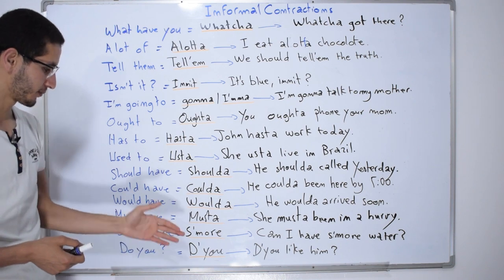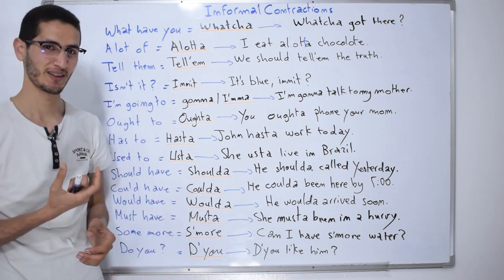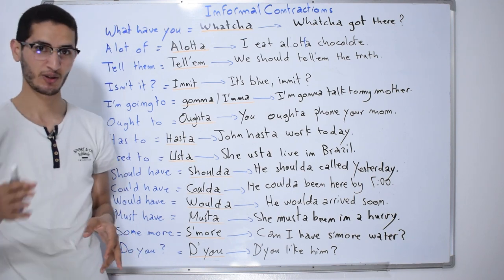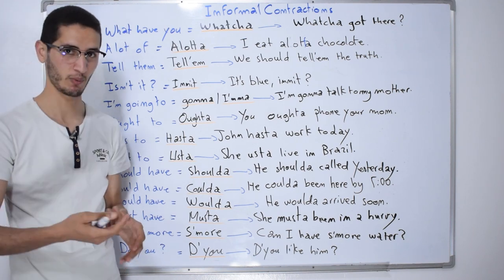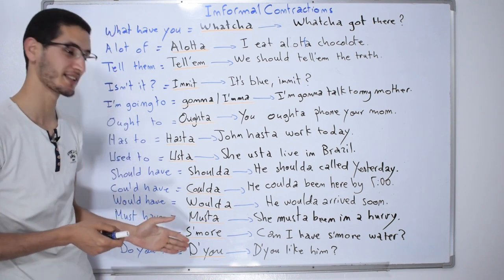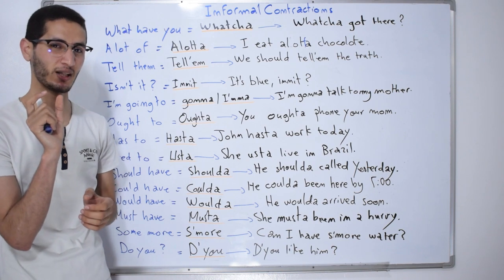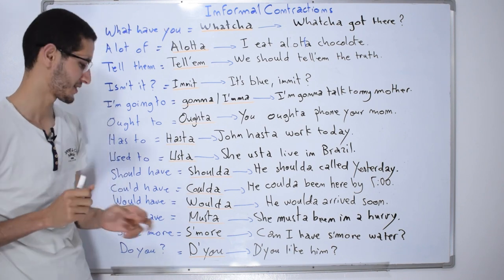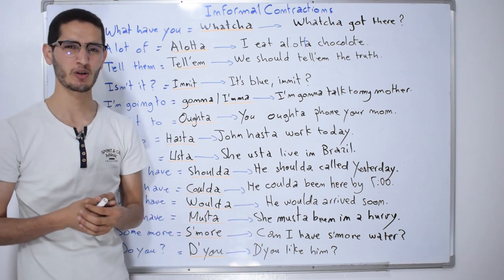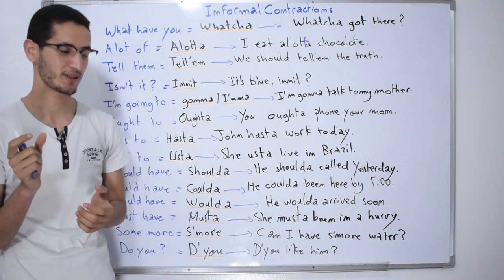'Some more' contracts to 's'more' — we delete the O-M-E from 'some,' replace with an apostrophe, and just have a small S sound at the beginning. For example: 'Can I have s'more water, please?' It's a quick, natural reduction in casual speech.